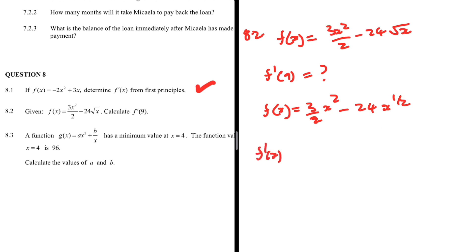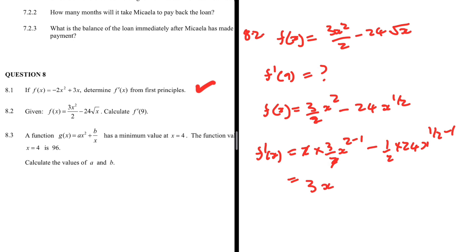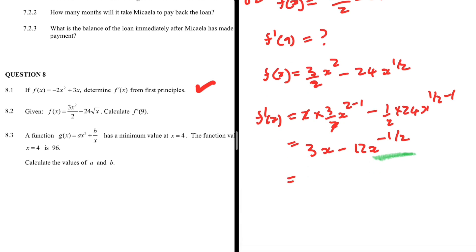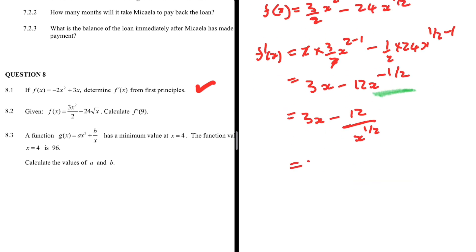Now applying the power rule: f prime of x = 2 × (3/2) × x^(2-1) minus (1/2) × 24 × x^(1/2 - 1). Simplifying: 2 and 2 cancel in the first term giving 3x, and 24 × (1/2) = 12, so the second term is -12x^(-1/2). We can rewrite x^(-1/2) as 1/√x, so f prime of x = 3x - 12/√x.